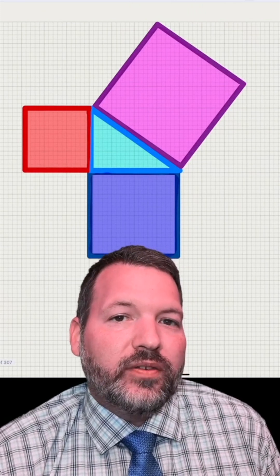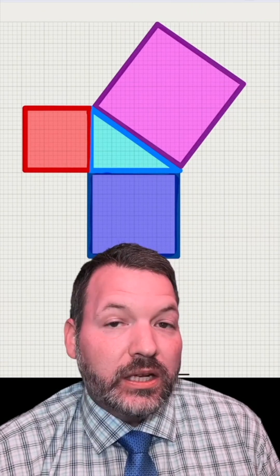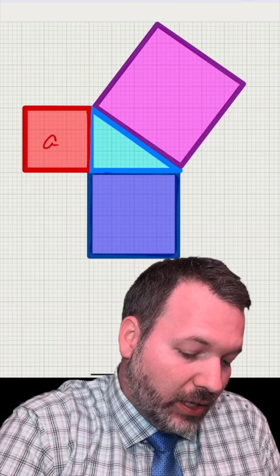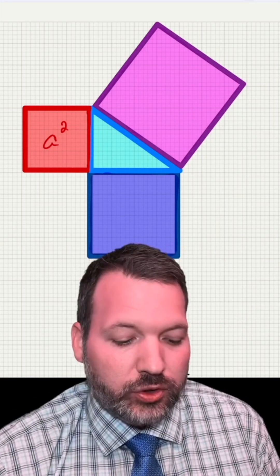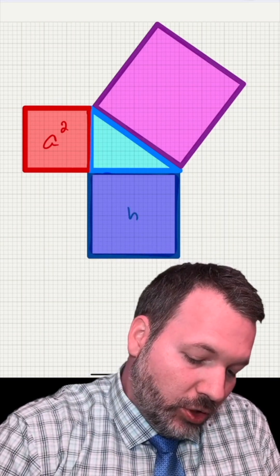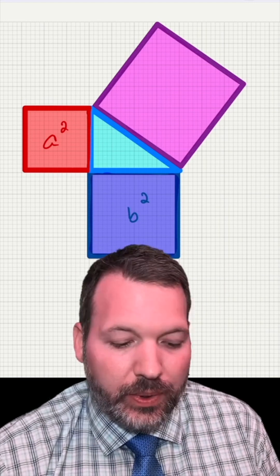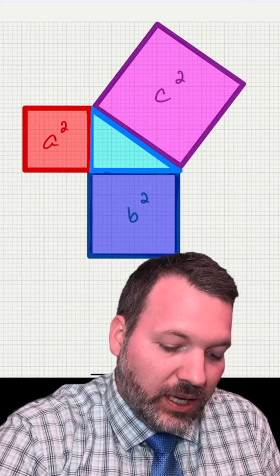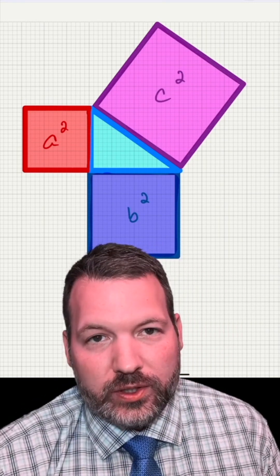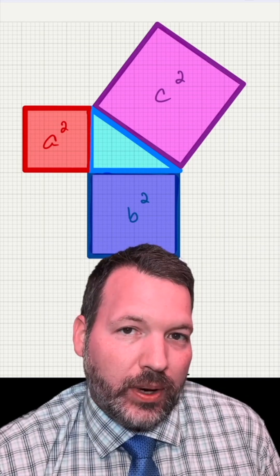Instead, when they would talk about the square of a leg of a right triangle, they literally meant the square you can draw from one of the legs of your triangle. And when you put those two squares together, a squared and b squared, their areas end up making the same thing as the area of the square you can draw from that hypotenuse.